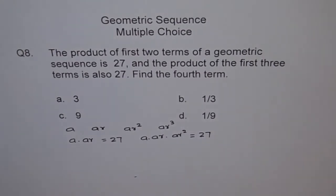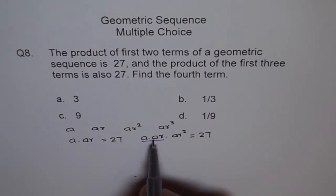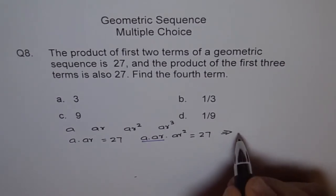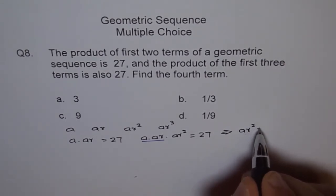It means what? It means that ar squared should be 1. If a times ar is 27, that means ar squared should be 1, right? So we get from here ar squared equals 1.